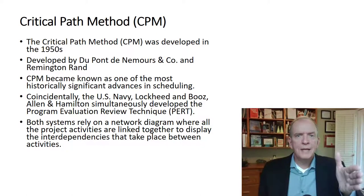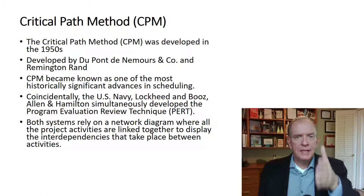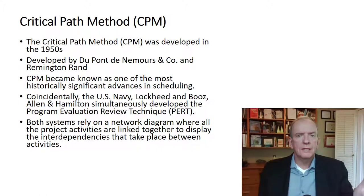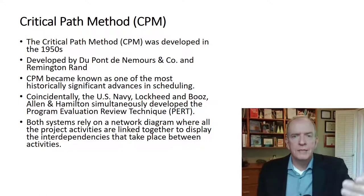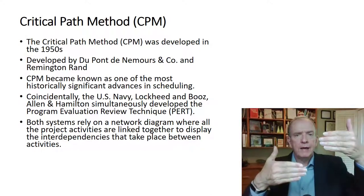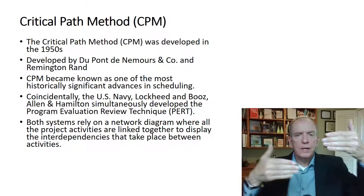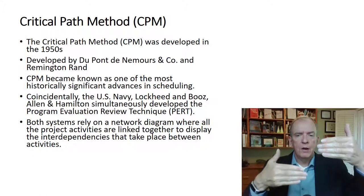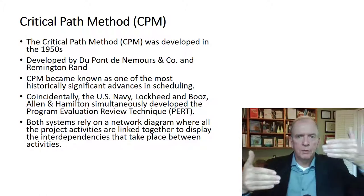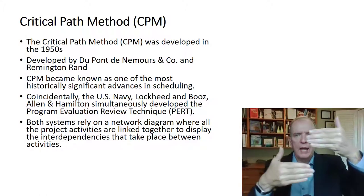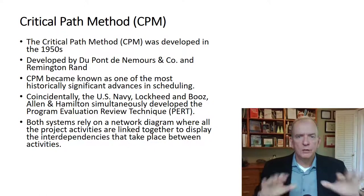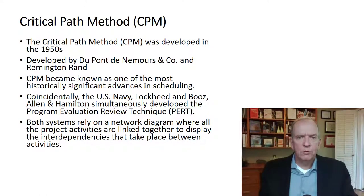Critical path connects all the activities involved in a project to form a network. That means: what must happen for me to start the next activity? What would be the predecessor? Having completed that activity, what would be the successor — what comes next? What can I do at the same time? Can activities wait a period of time? Or can activities overlap each other? We put them all together in this network.